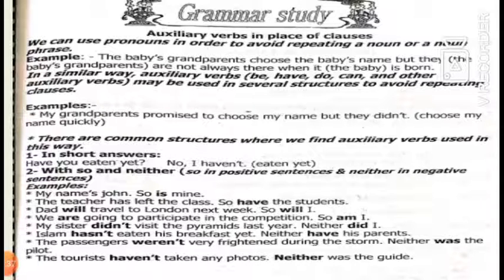We can use pronouns in order to avoid repeating a noun or noun phrase. For example, 'the baby's grandparents show the baby's name, but they are not always there when it is born' — here we use the pronoun 'they' to avoid repeating 'the baby's grandparents.' Similarly, auxiliary verbs like verb to be, verb to have, verb to do, can, and others may be used to avoid repeating clauses. For example, 'my grandparents promised to choose my name, but they didn't' — meaning they didn't choose my name.